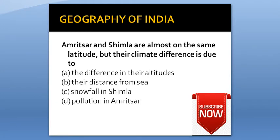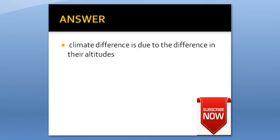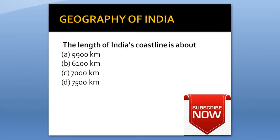Amritsar and Shimla are almost on the same latitude but their climate difference is due to: Option A: The difference in their altitudes. Option B: The distance from sea. Option C: Snowfall in Shimla. Option D: Population in Amritsar. Answer is the difference in their altitudes, Option A.